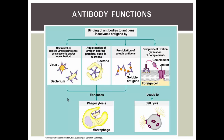A third thing antibodies can do is cause precipitation. If an antigen is normally dissolved in plasma, it's hard for a phagocyte to grab it. So the antibody binds to the antigen and causes it to come out of solution — to precipitate — making it easier for a macrophage or neutrophil to grab and engulf it. Finally, IgG and IgM activate complement, which leads to the formation of membrane attack complexes, creating lesions so the cell bursts — essentially bleeding to death.